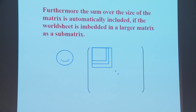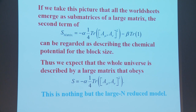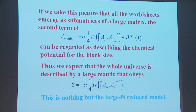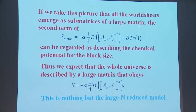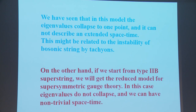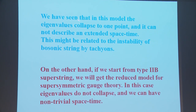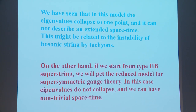Furthermore, the sum over the size of the matrix is automatically included if the worldsheet is embedded in a larger matrix as a submatrix. Taking the picture that all worldsheets emerge as submatrices of a large matrix, the second term of the action can be regarded as describing the chemical potential for the block size. Thus we expect that the whole universe is described by a large matrix obeying this action — which is nothing but the large-N reduced model.